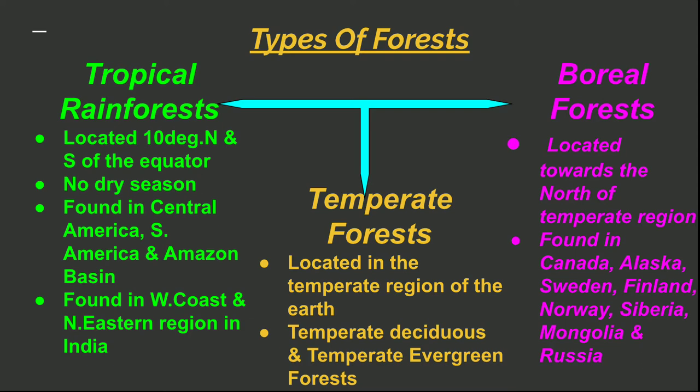The temperate forest is located in the temperate region of the earth. There are two types of temperate forest: deciduous and evergreen. Boreal forests are located towards the north of the temperate region. They are found in Canada, Alaska, Sweden, Finland, Norway, Siberia, Mongolia and Russia.